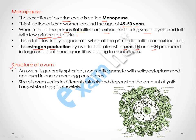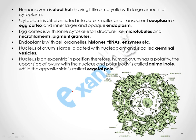Now we will discuss the structure of the ovum. The ovum is generally a spherical, non-motile gamete with yolky cytoplasm, enclosed in one or more egg envelopes. It has a nucleus in the center, a cytoplasm layer, and an outer cell envelope. The cytoplasm is slightly yolky. The size of the ovum varies in different animals depending on the amount of yolk — the largest being the ostrich egg. The human ovum is alecithal, meaning it has little or no yolk.